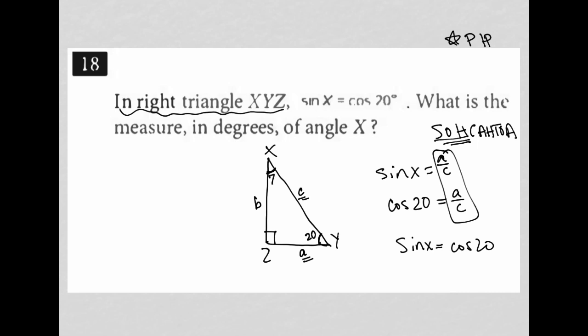If that angle is 20 degrees, then angle X must be 70 degrees, because all three angles must add up to 180. The question asks for the measure in degrees of angle X — the answer is 70.